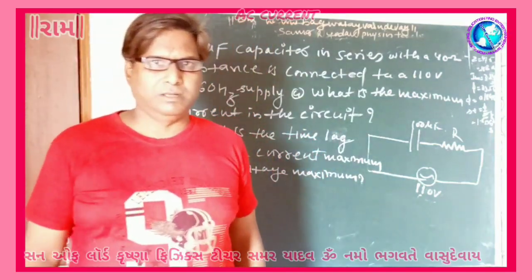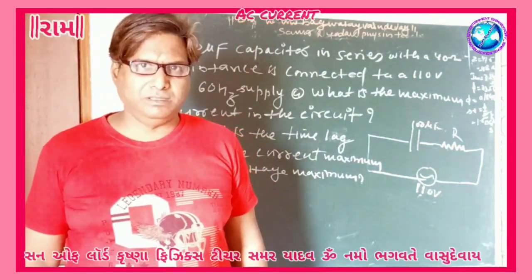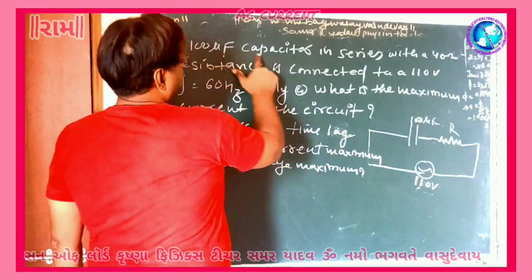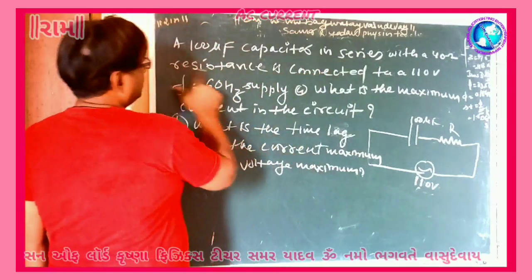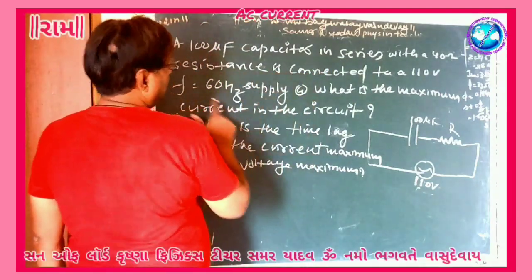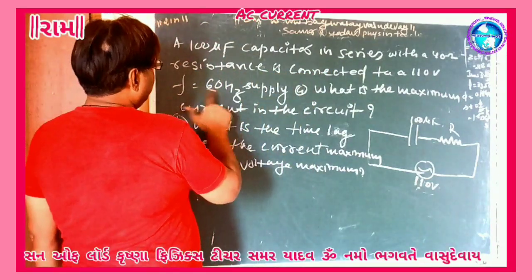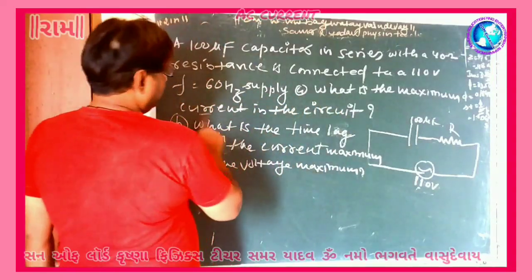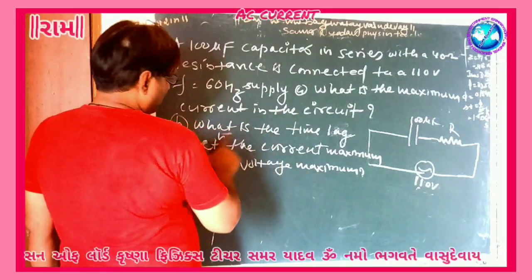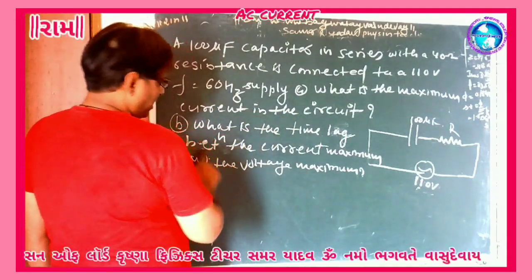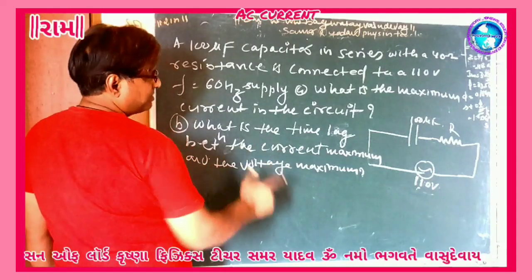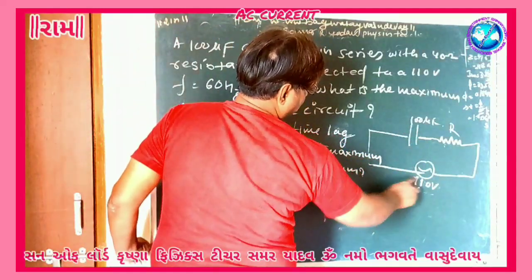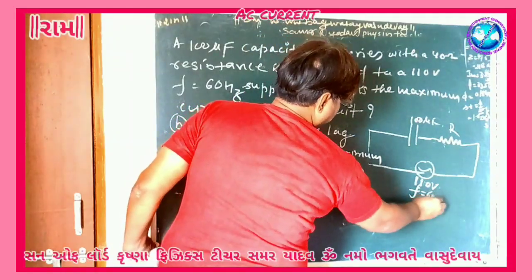Today in the AC current, we will solve a numerical. The numerical is: a 100 microfarad capacitor in series with a 40 ohm resistance is connected to a 110 volt, 60 hertz supply. We need to find: first, the maximum current in the circuit, and second, the time lag between the current maximum and the voltage maximum.